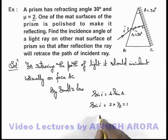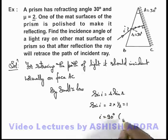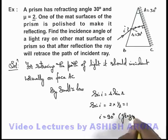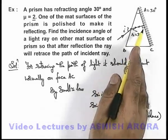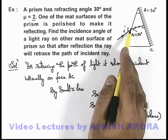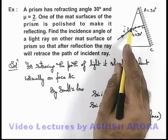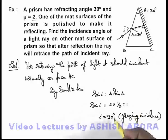So in this situation, the value of i is coming out to be 90 degrees. This is the case of grazing incidence. That means the light will retrace the path of the incident ray only when light is incident onto this matte surface at i equal to 90 degrees, or in grazing fashion. That will be the answer to this problem.